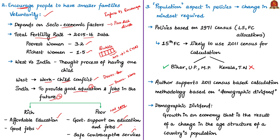The third issue the author discusses concerns development policies associated with population. The author says certain methods are outdated or not suitable in the current scenario and India must change its mindset about how population is incorporated in broader development policies. Specifically, the author discusses seat allocation in Lok Sabha and centre-state financial allocation under various Finance Commissions. These policy decisions are based on the 1971 population of states. However, between 1971 and now, population growth has varied significantly — Kerala's population grew by 56% between 1971 and 2011, whereas Bihar, Uttar Pradesh and Madhya Pradesh grew by 140% in the same period.